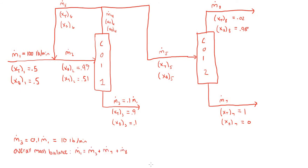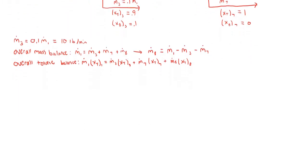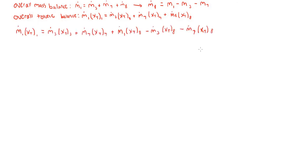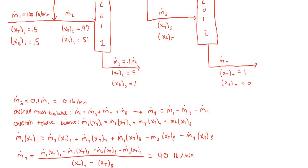Since we want to get the mass balance equation in terms of one unknown, I'm going to solve it for M.8. Now I'm going to use our second equation, which is the overall toluene balance on the system. From here, we can plug in what we solved for M.8 into the toluene balance to get it in terms of just M.7, then rearrange and plug in the numbers to solve for M.7. Plugging everything in, you get that the bottom product flow rate of the second column is 40 pounds per minute. Dividing that by the feedstock flow rate of 100 pounds per minute, the final answer for the first part is that the bottom product of the second column accounts for 40% of the feedstock.